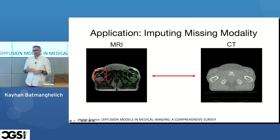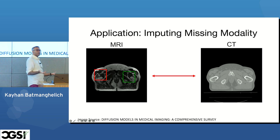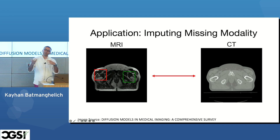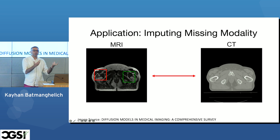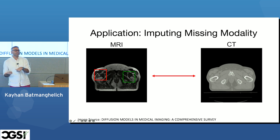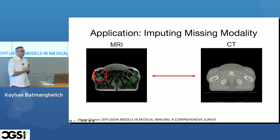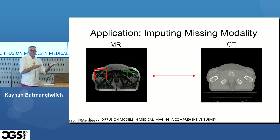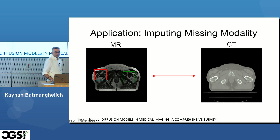Another application is modality imputation. Say a patient comes in for an MRI scan but you're suspicious about something in the bone. Bone doesn't have enough contrast in MR for visual understanding, so you want to synthesize a CT image, which has better bone tissue contrast — without sending the patient back to a scanner. A generative model can synthesize the CT from the MRI.